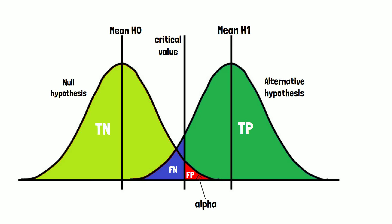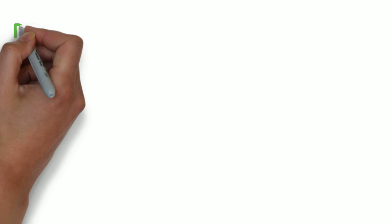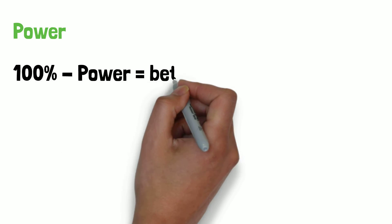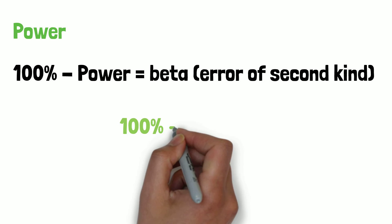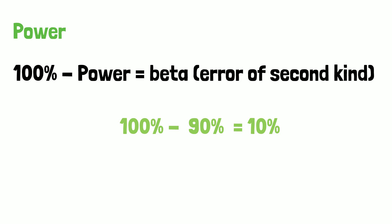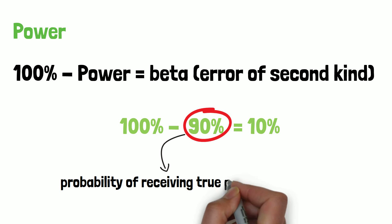The probability of falsely accepting the null hypothesis is also called beta error or type 2 error. Equally to the alpha error, it is determined in the planning phase of a clinical trial when considering the power of a statistical test, because the beta error is calculated by subtracting power from 100%. For example, if you have a beta error of 10%, then the power of your test is 90%. So the probability of receiving true positive test results is 90% if your drug is really effective.